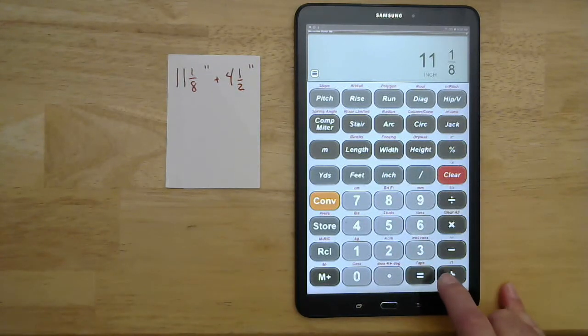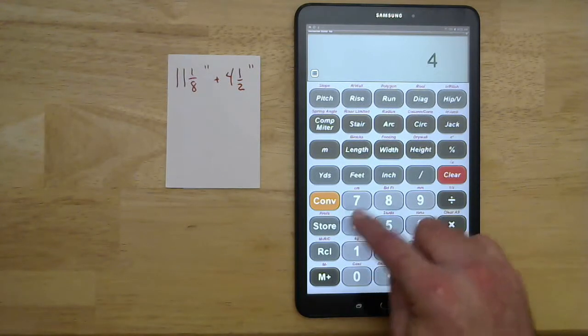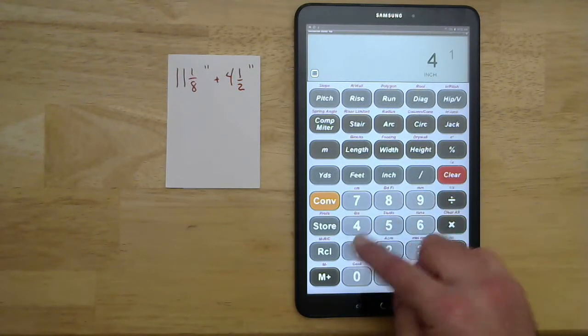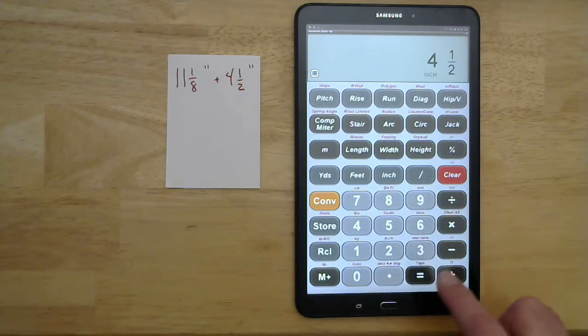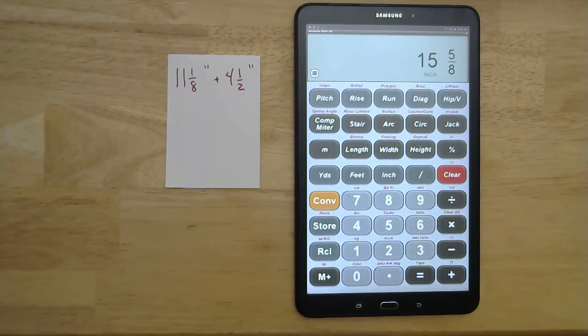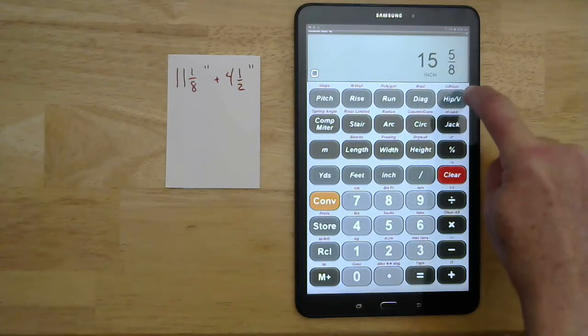Plus four inches, one, fraction bar, two. That gives me fifteen and five-eighths inches. Fifteen inches and five-eighths.